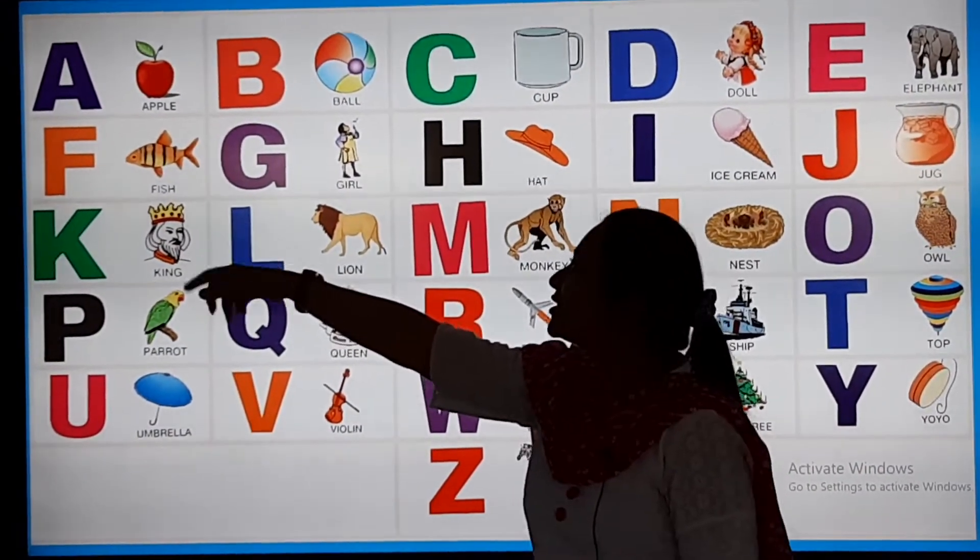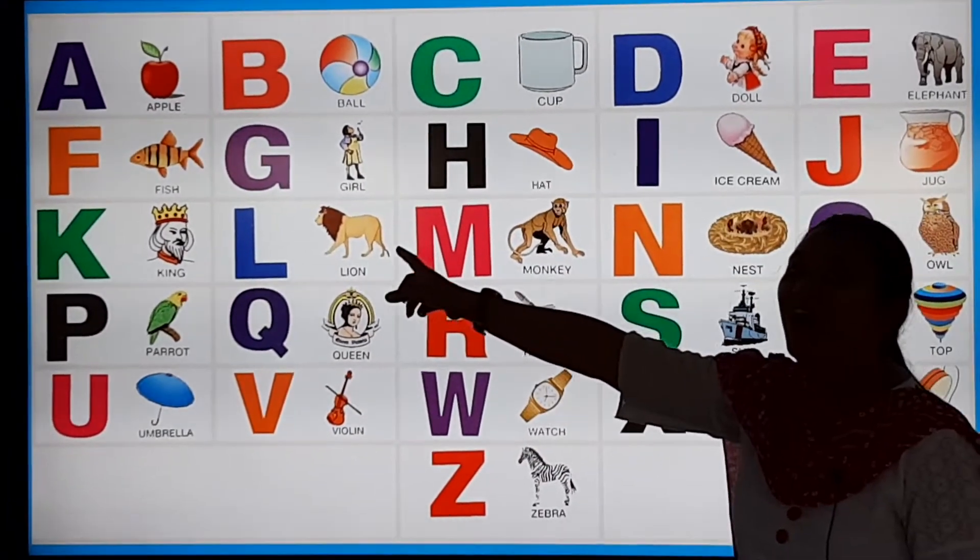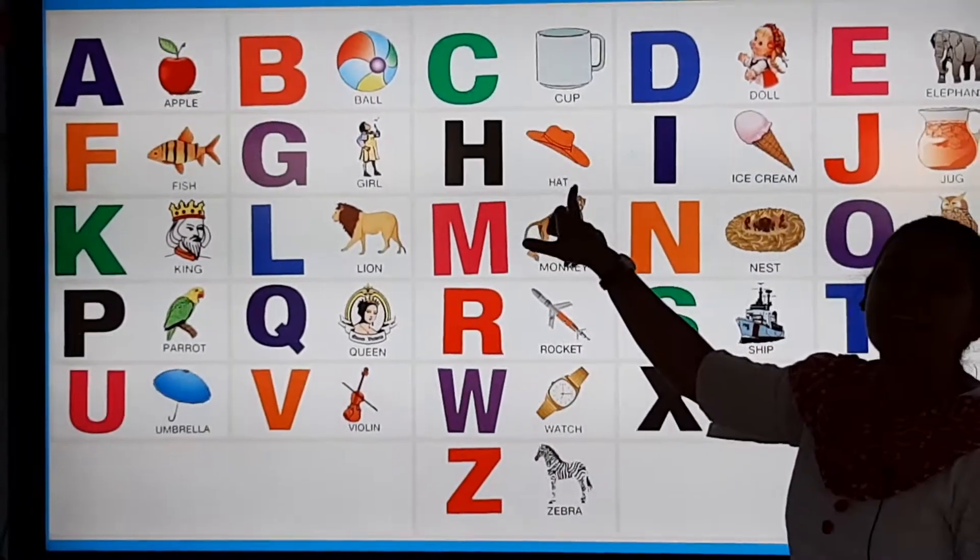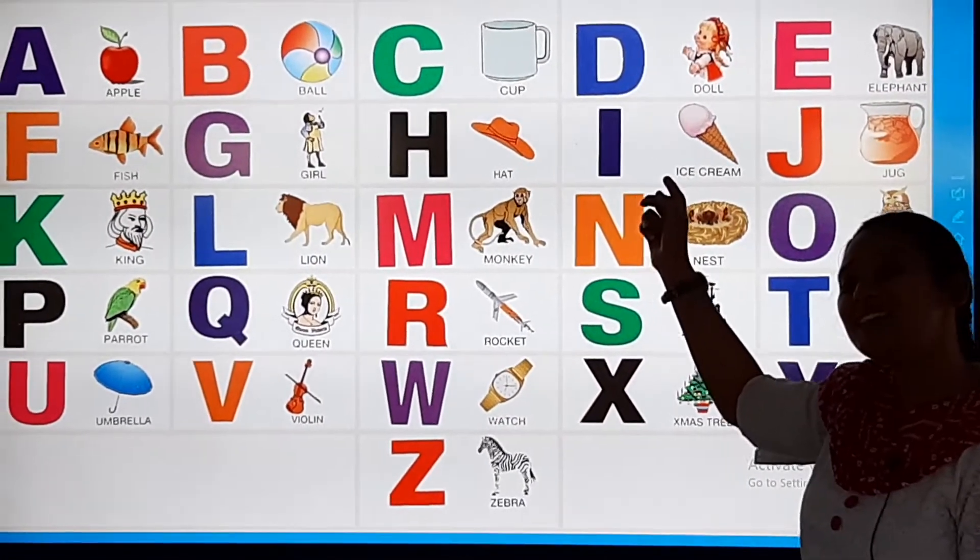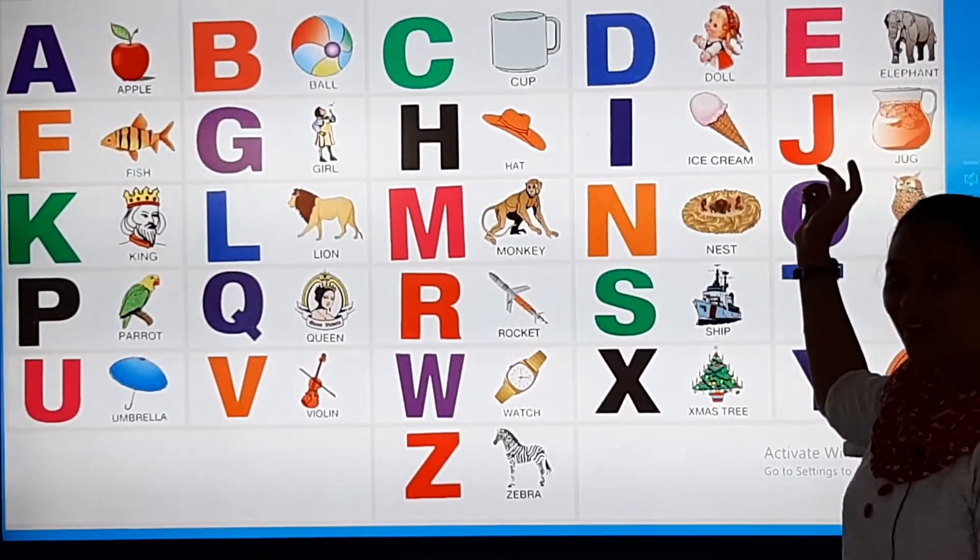Students F, F for Fish, G, G for Girl, H, H for Hat, I, I for Ice Cream, J, J for Jug.